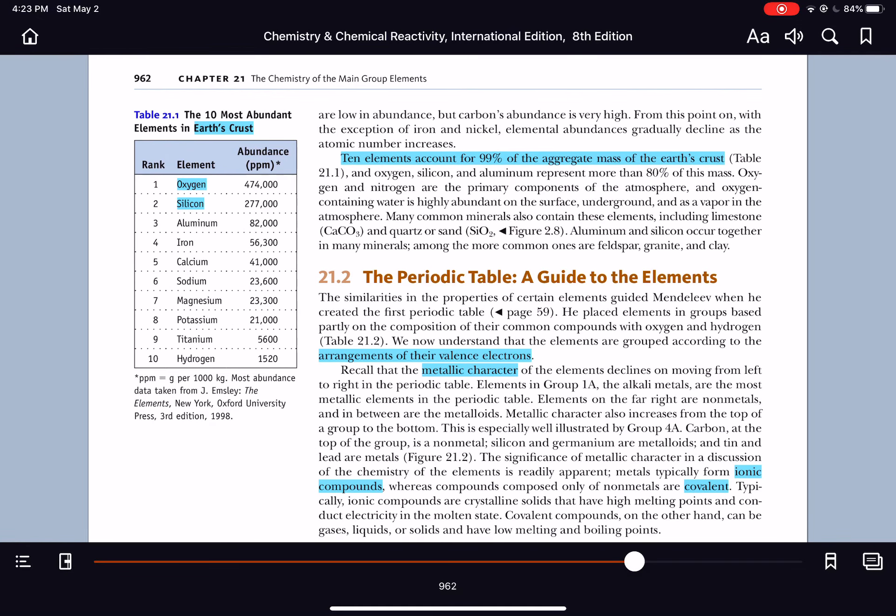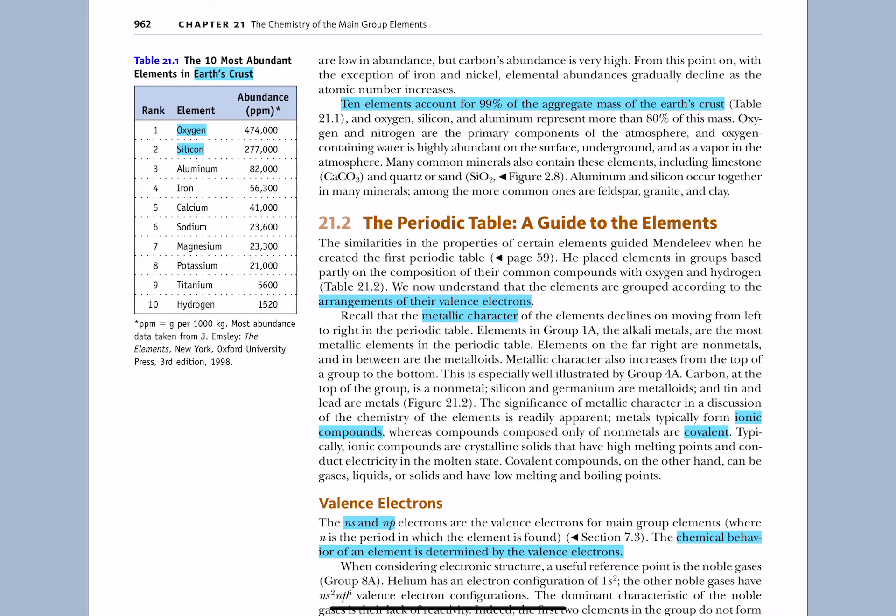Now, let's look at the Earth's crust. Notice that in the Earth's crust, hydrogen drops from number one in the solar system to number 10. And in the Earth's crust, oxygen and silicon go right to the top.